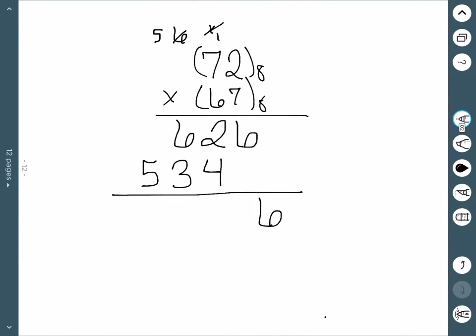This is 6. 4 plus 2 is 6. 6 plus 3 is 9. 8 can go into 9 once with 1 left over. And then we have 6. Therefore, final answer, 6 1 6 6 base 8.